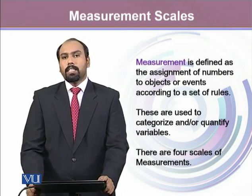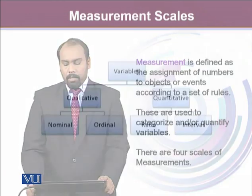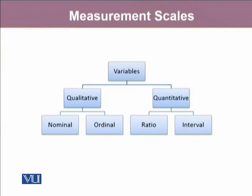There are four different scales of measurement depending upon the type of variable. It could be nominal, ordinal, ratio, or interval. Nominal and ordinal measurement scales are for qualitative variables, for categorical variables. Whereas ratio and interval measures are for quantitative variables.